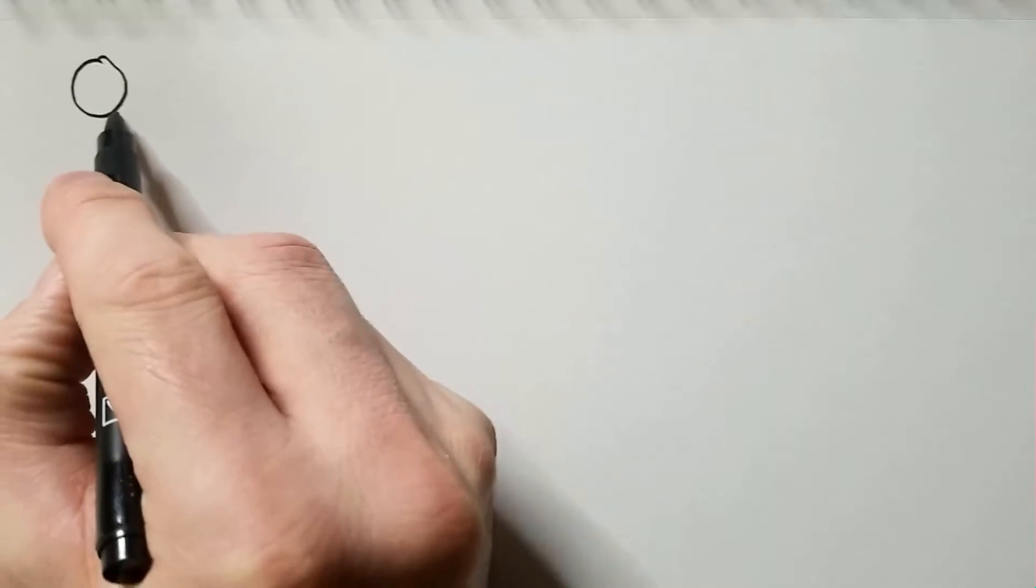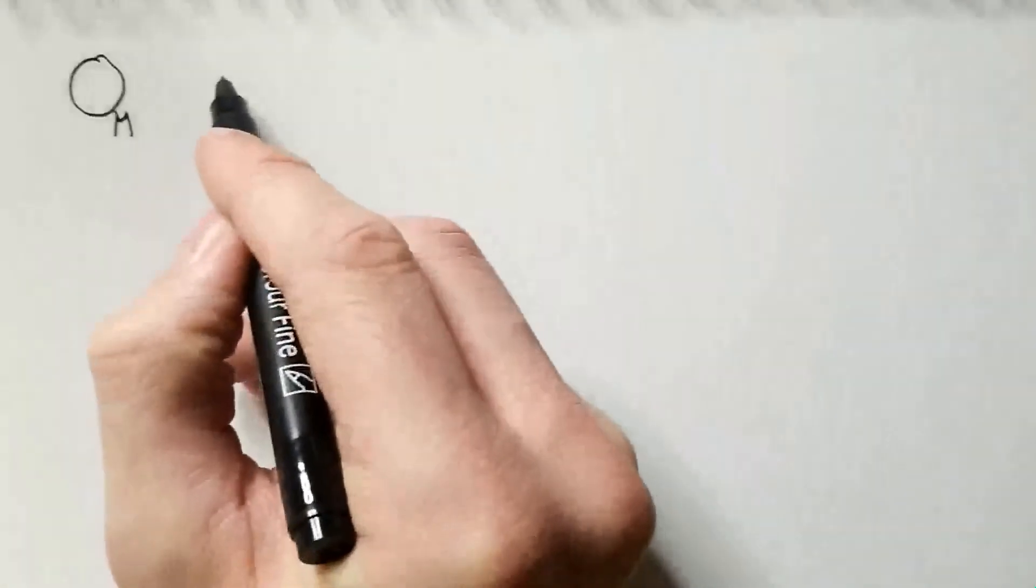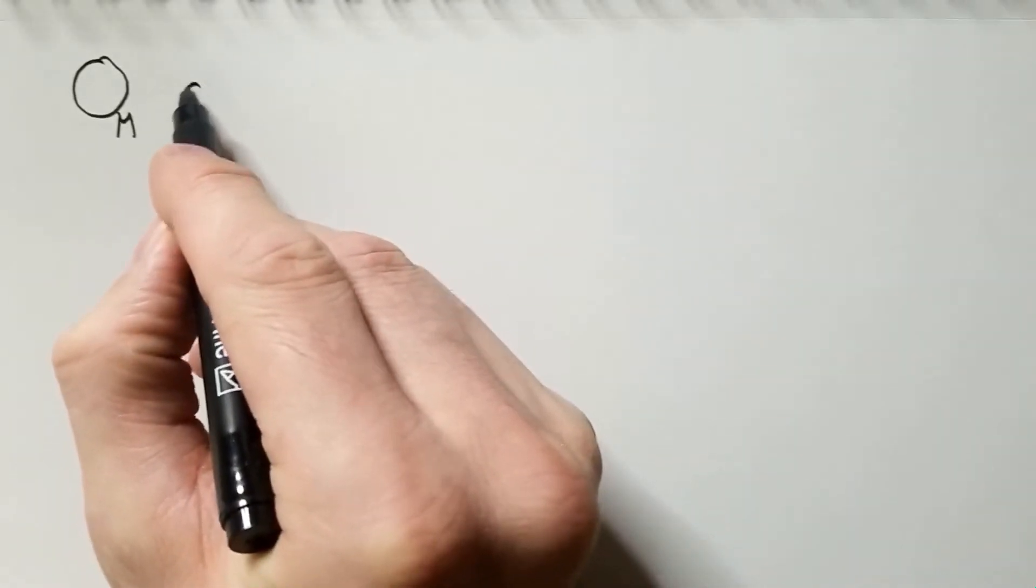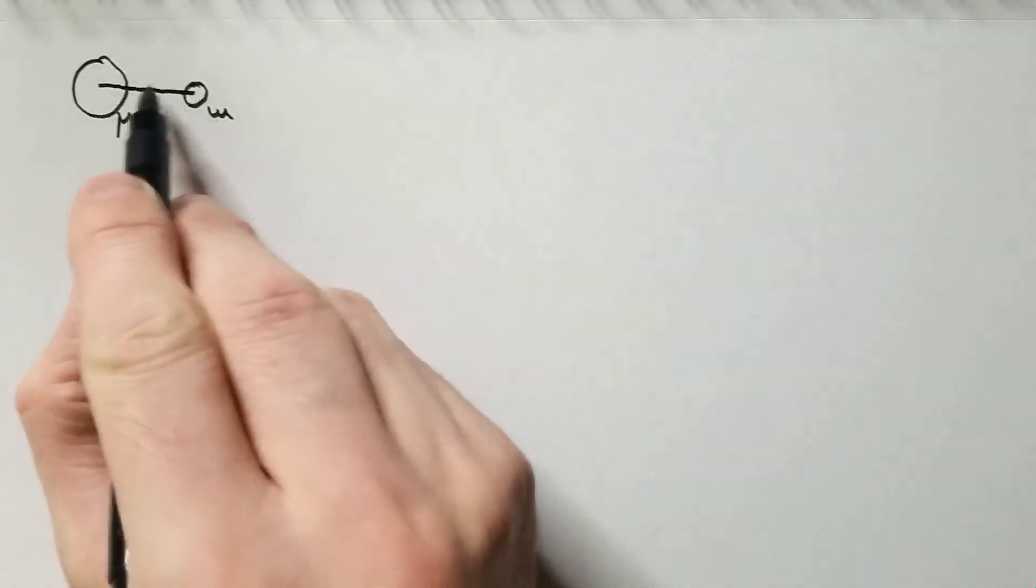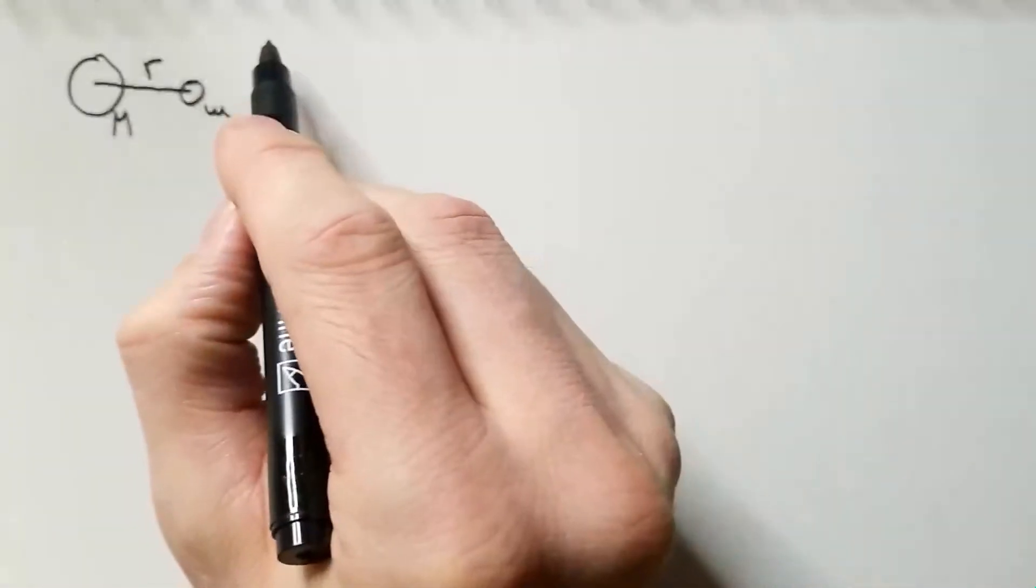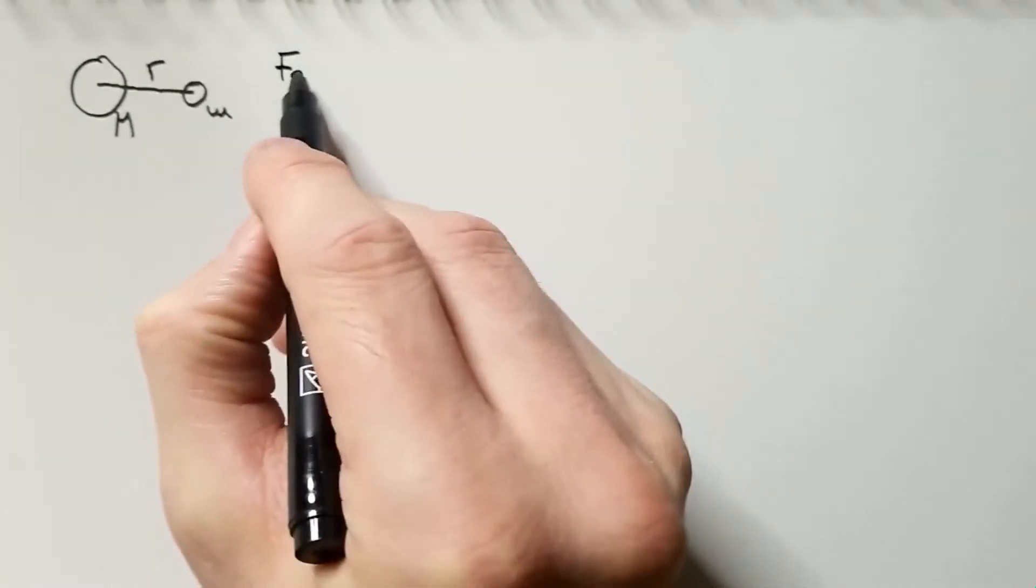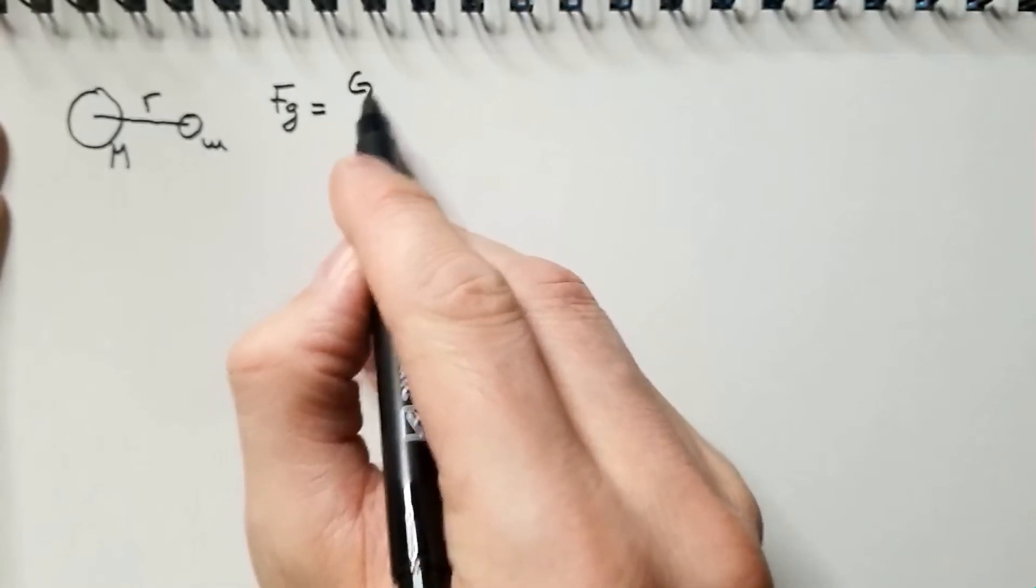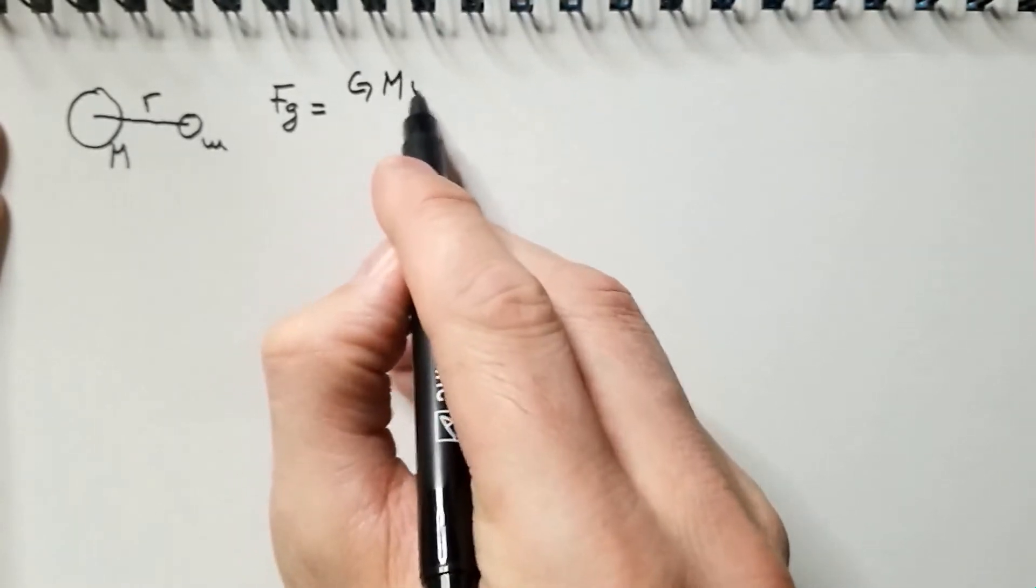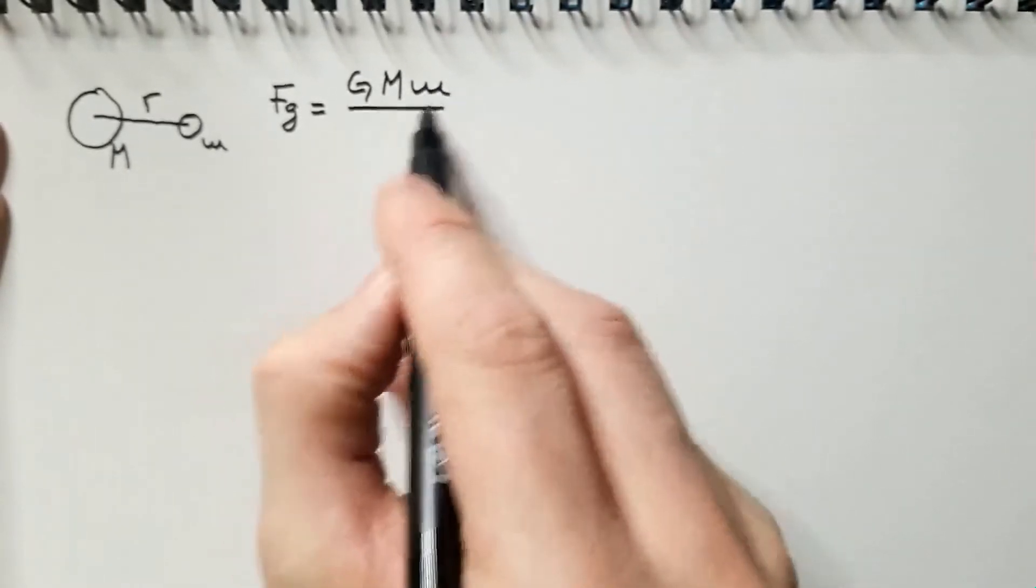Okay, we have two bodies. One body has a mass capital M, and another one has a mass small m. Their distance is r, distance between their center of masses. Then, the universal Newton's law of gravity says that gravitational force is equal to G, capital M, small m, divided by r squared.